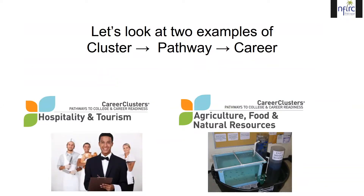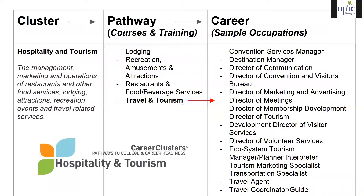We're going to look at the hospitality and tourism career cluster and the agriculture, food and natural resources career cluster. On the left, you see the career cluster hospitality and tourism. This cluster is described as the management, marketing, and operations of restaurants and other food services, lodging, attractions, recreation events, and travel related services — so that's a broad group. In that career cluster you'll find multiple pathways: lodging, recreation, restaurants, travel, and tourism, all broken out into specific pathways.